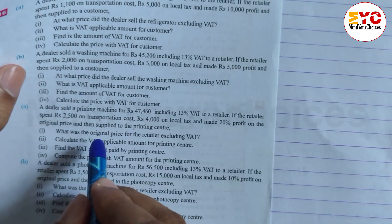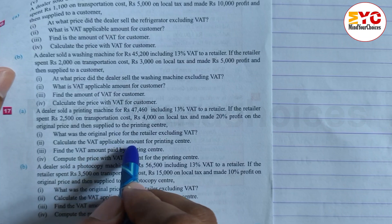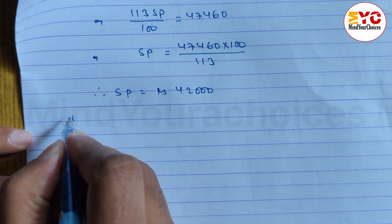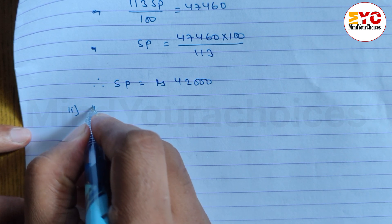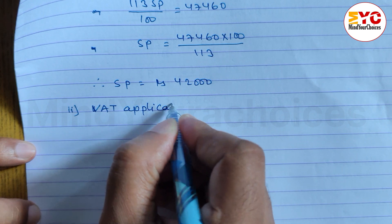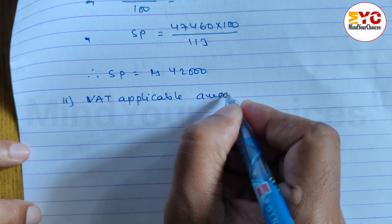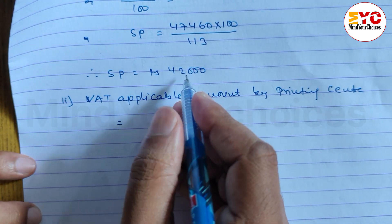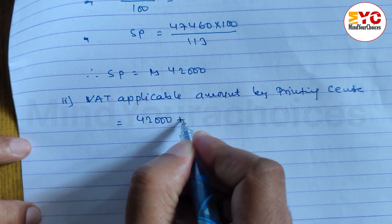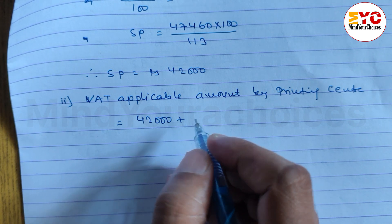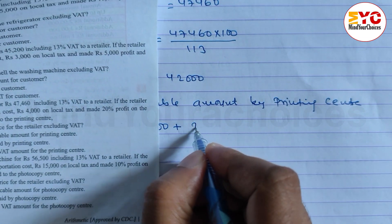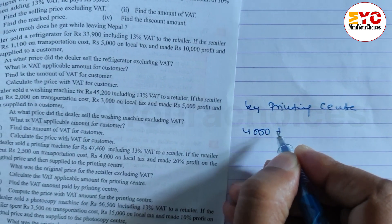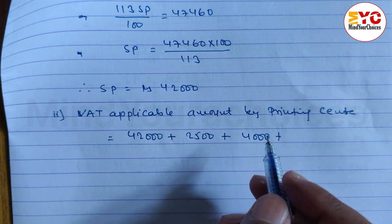Now question number B: calculate the VAT applicable amount for the printing center. So we need to find the VAT applicable amount, which is the selling price for the customer. We can write here: VAT applicable amount for the printing center is equal to the selling price of Rs. 42,000, plus our local tax.